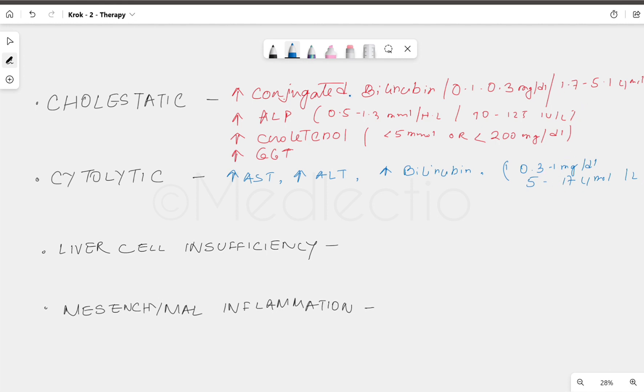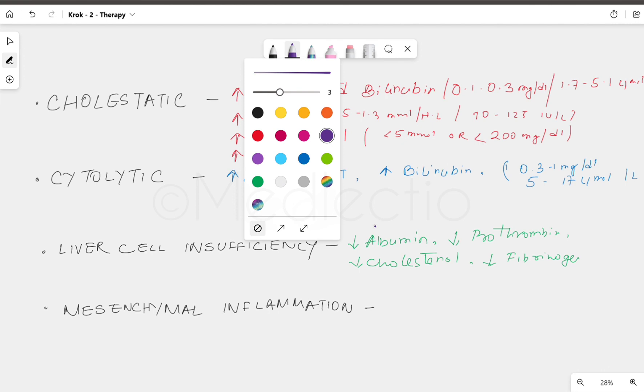In liver cell insufficiency, you have decreased albumin, decreased prothrombin, decreased cholesterol, and decreased fibrinogen.